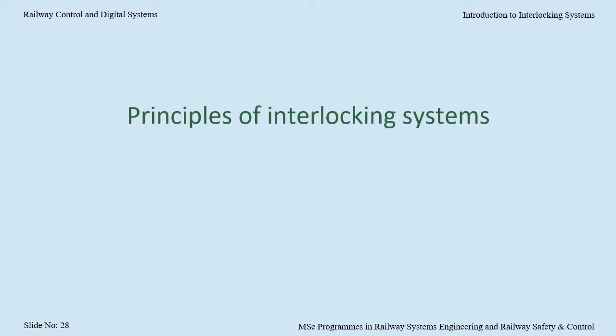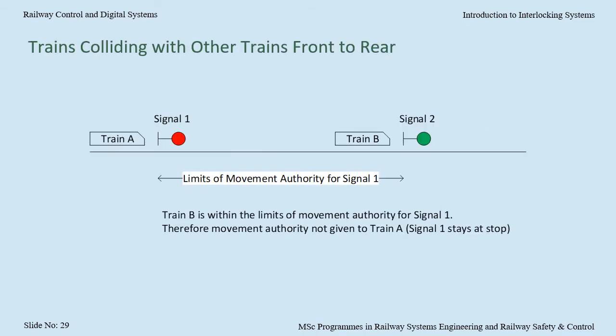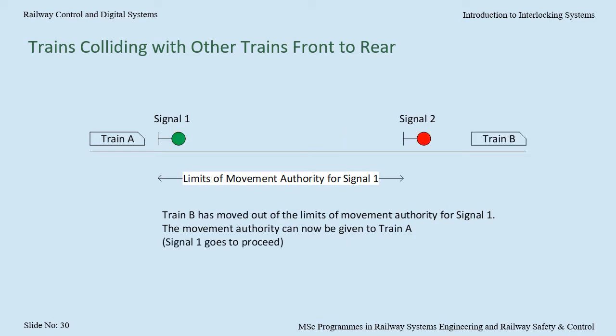So what does the interlocking check for? Let's go back to the risks we talked about at the start. Consider the risk of trains colliding with other trains. There are three principal scenarios. Firstly, there is a train colliding with the rear of another train. Before the interlocking allows a movement authority to be given to train A, it first confirms that no other train is within the limits of that movement authority. Once train B has moved out of the limits of that movement authority, it can then allow the movement authority to train A.